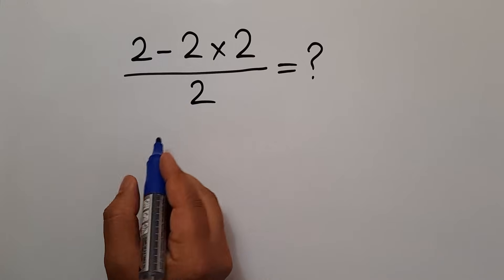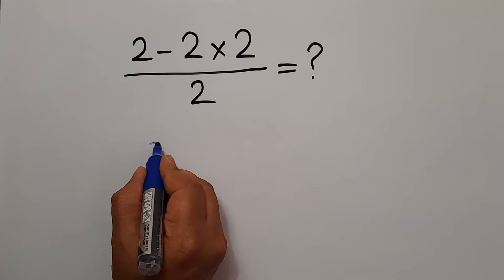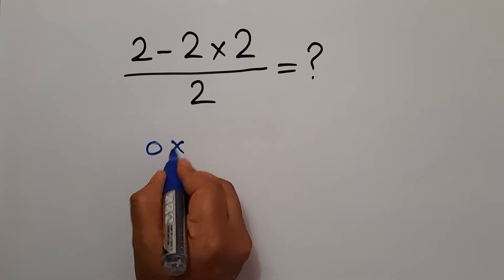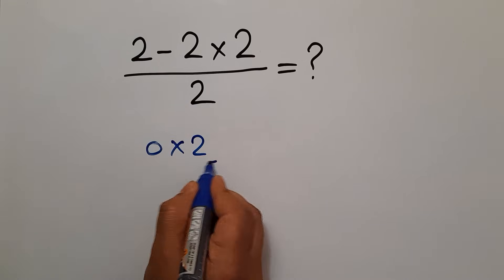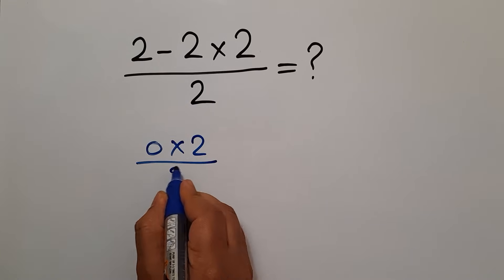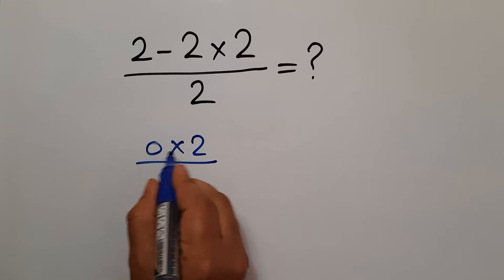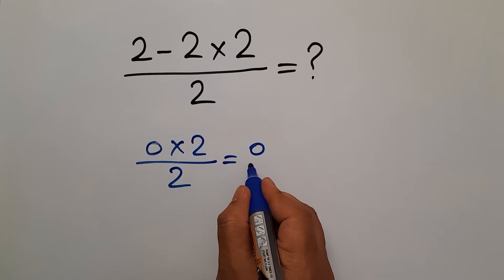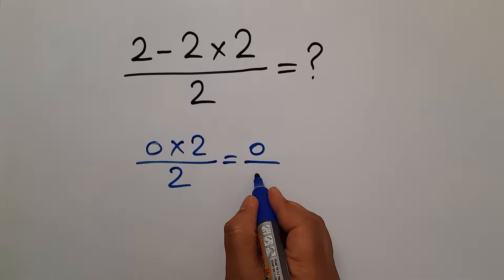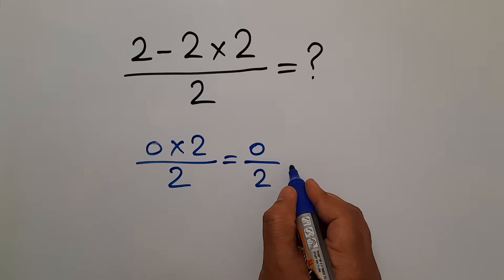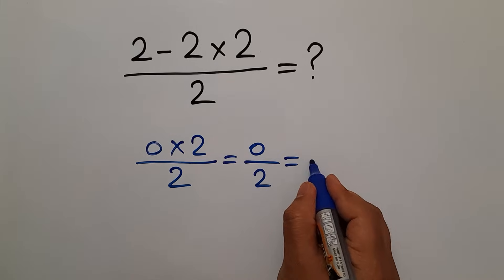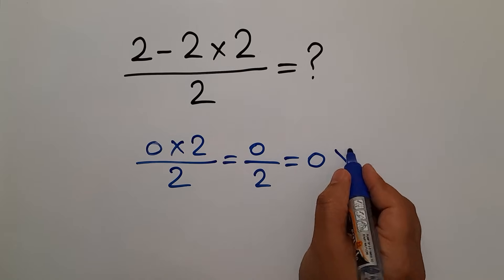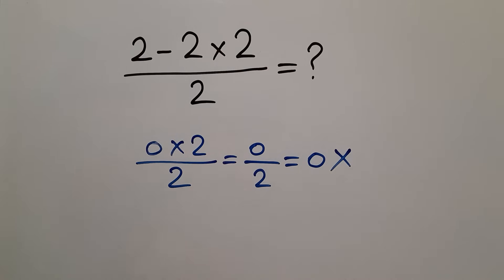2 minus 2 gives us 0. And 0 times 2 divided by 2 — 0 times 2 gives us 0, and 0 divided by 2 equals 0. But this answer is not correct.